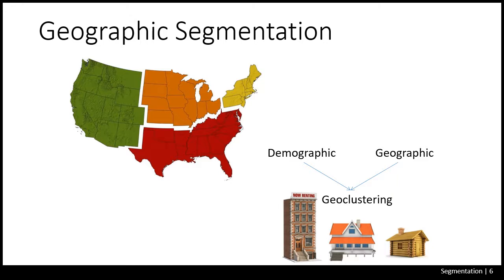Besides geographic differences across regions, there are also differences within the same metropolitan statistical area, such as Boise or Chicago. Over the last couple of decades, a system called PRISM by Claritas has been established. It's a geo-clustering approach that combines geographic data with demographic data to yield richer descriptions of consumers and neighborhoods, looking at education and affluence, family life cycle, urbanization, race and ethnicity, and mobility. Inhabitants in a cluster tend to lead similar lives, drive similar cars, have similar jobs, and read similar magazines.